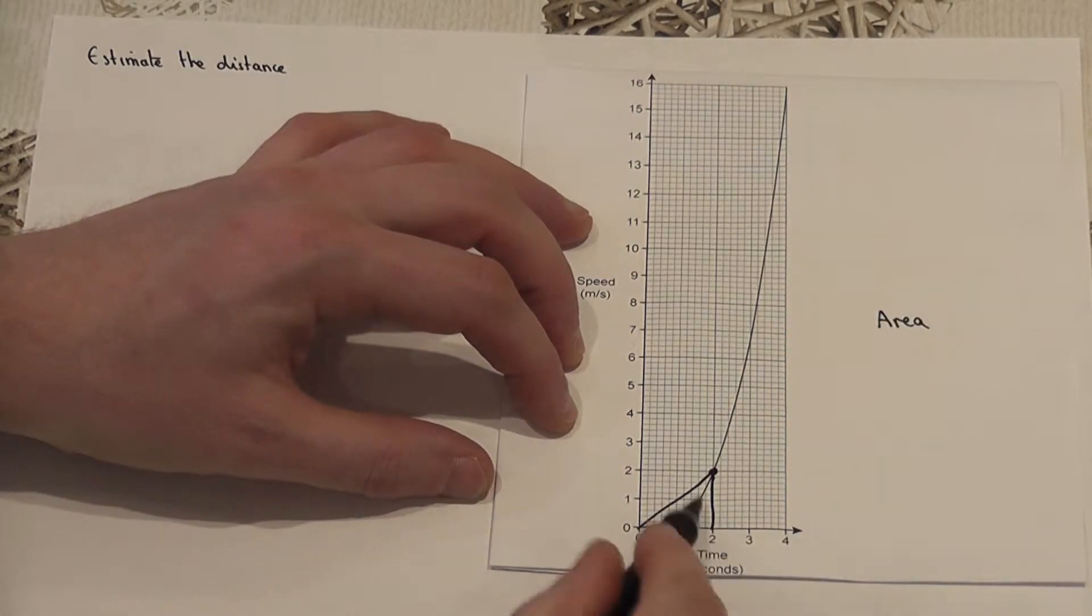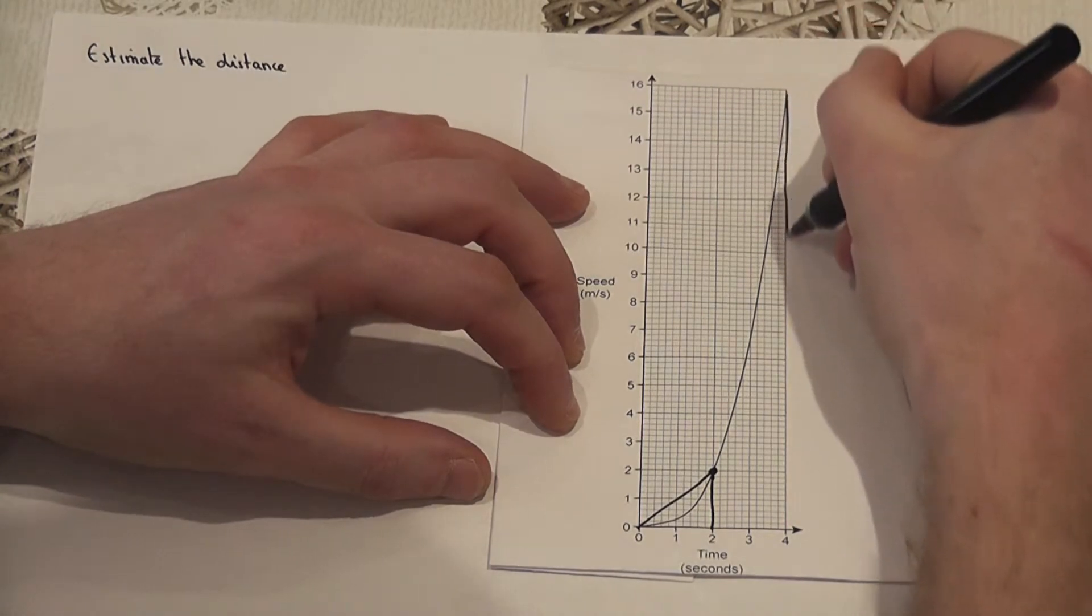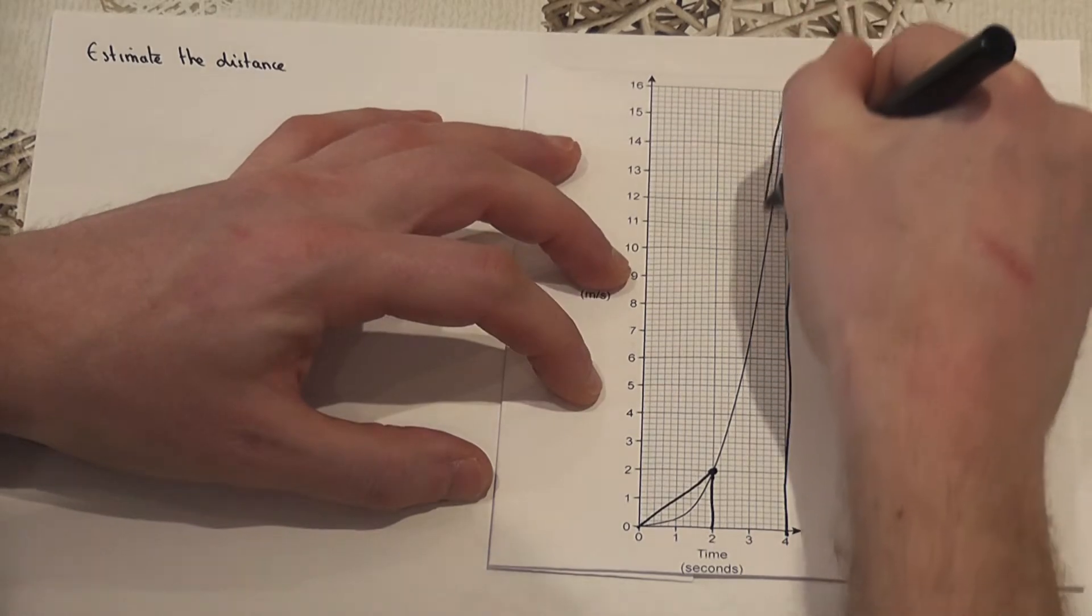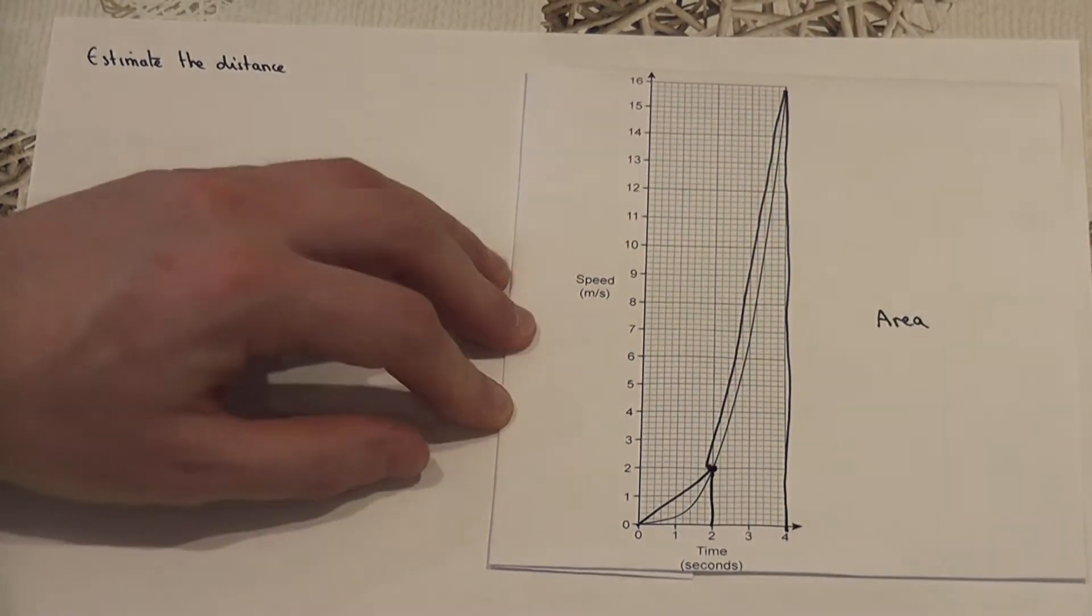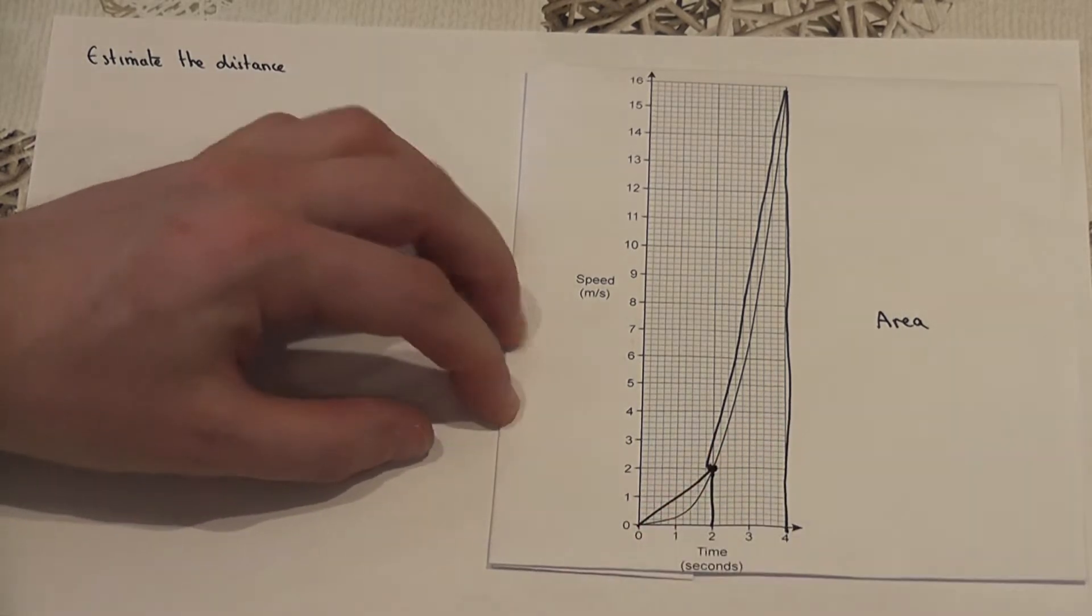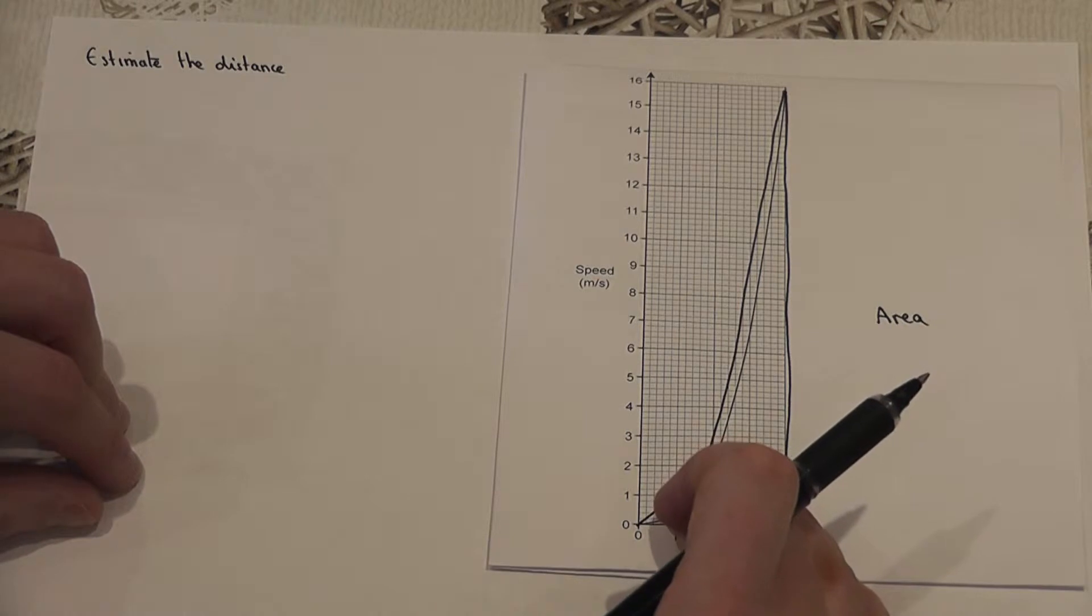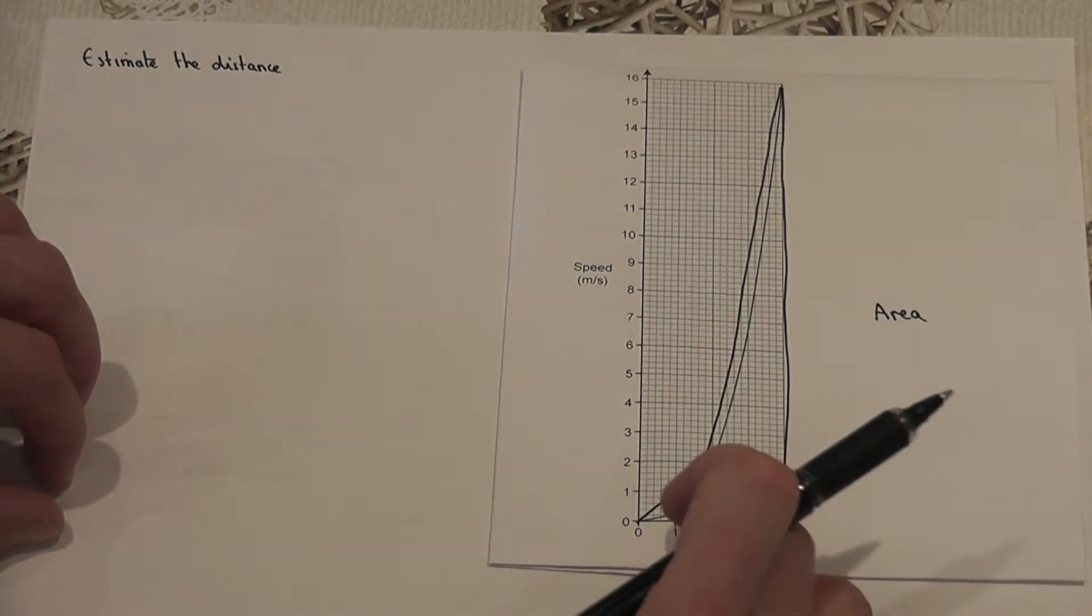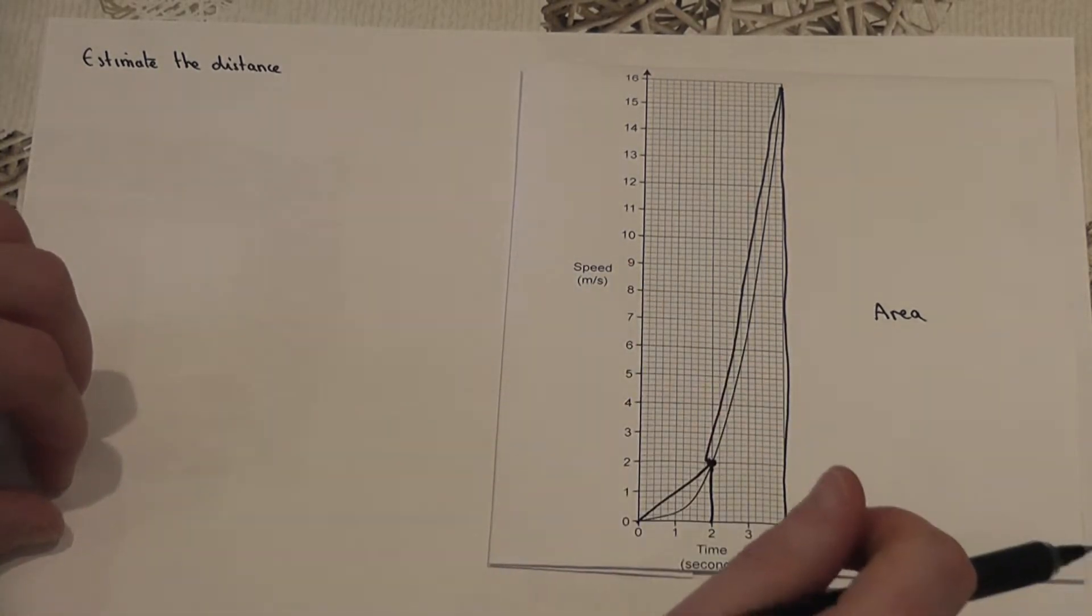So the first approximation is a triangle and then the second approximation is a trapezium. If I can find the area of these two shapes it'll give an approximate estimate for the distance covered. However, because the graph's below the shapes or the shapes are bigger than the graph, it'll be an overestimate.